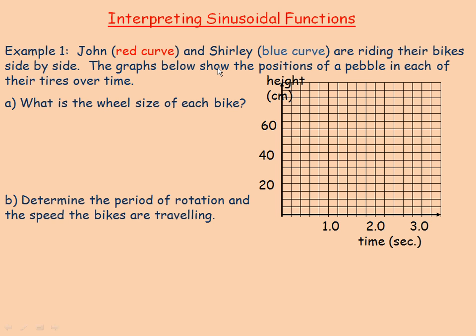We have two people riding bicycles, John and Shirley. As we go across the screen here and draw the graph, you'll see that John is riding the larger bicycle. He completes in three seconds three cycles, Shirley completes four.